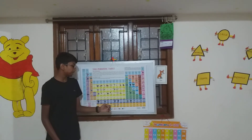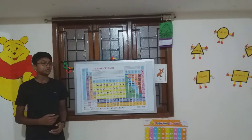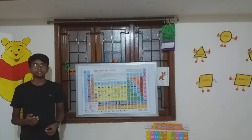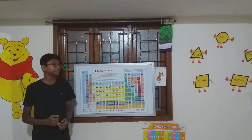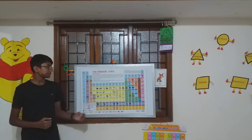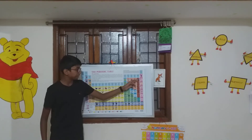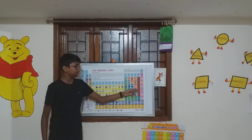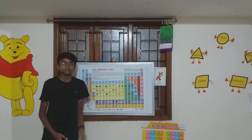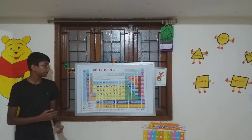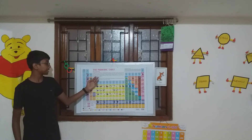Last but not the least, halogens. Halogens are six non-metallic elements. They are fluorine, chlorine, bromine, iodine, and astatine. I hope you have understood about the classification of the elements in the periodic table.